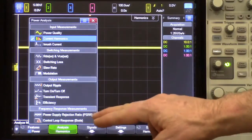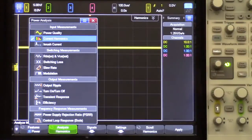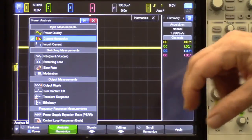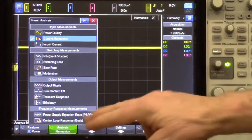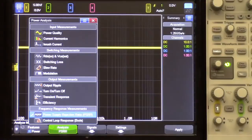Under analysis, I can see a list of all the power supply related measurements that can be performed with this scope if it has the power option. And by the way, we have videos on all of these. But right now, we're going to select the power supply rejection ratio measurement.